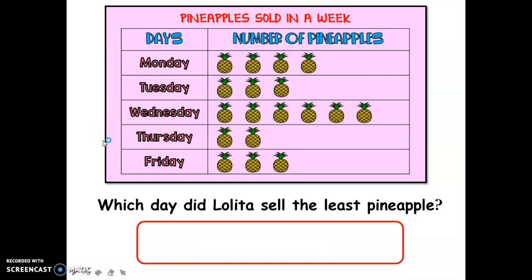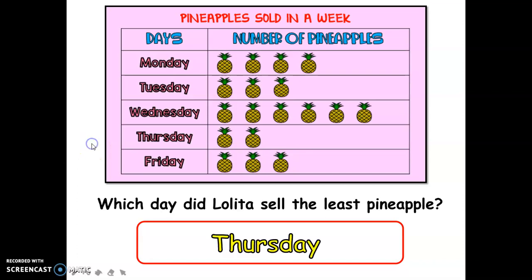Next, which day did Lolita sell the least pineapples? It was on Thursday, because she was only able to sell two pineapples on that day.